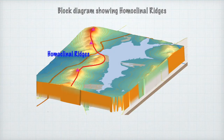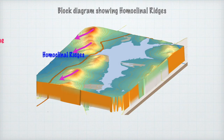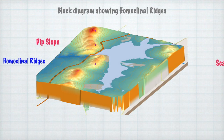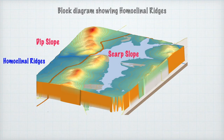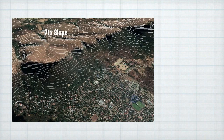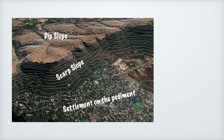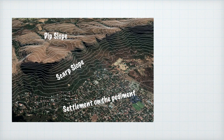Because of the dipping of the homoclinal ridges, let's now look at a block diagram. There we see the homoclinal ridges, the dip slopes, and on the other side the scarp slopes. Now let's look at a Google image with contour lines overlaid — notice it shows your dip slope and your scarp slope. Notice how settlement develops along the pediment of the scarp slope, because that area is level and people could build homes there and also cultivate those areas, as you saw on the topographic map.